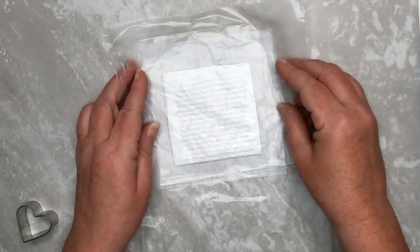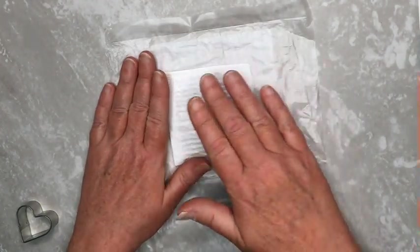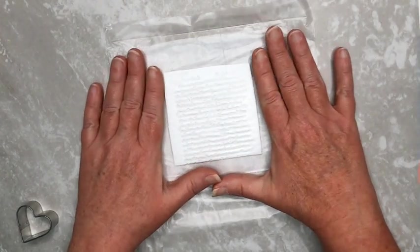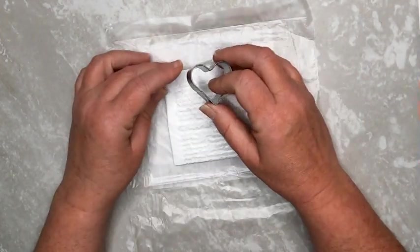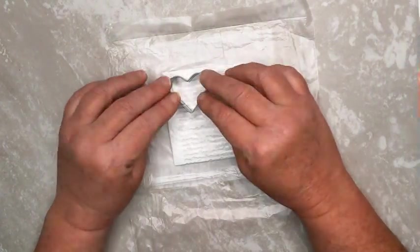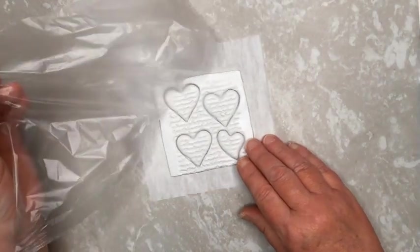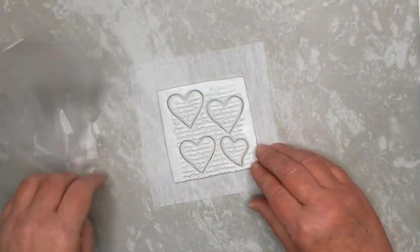Place a piece of plastic wrap over the clay and smooth it out to get rid of any wrinkles. Use the heart cutters to cut out as many heart shapes as you'd like. When you've finished cutting out your heart shapes, carefully remove the plastic wrap.